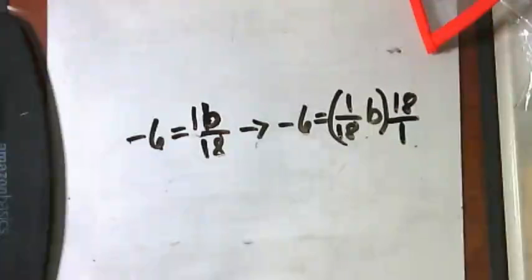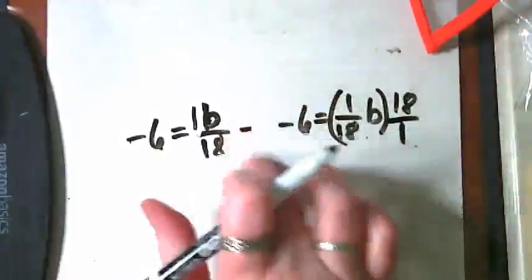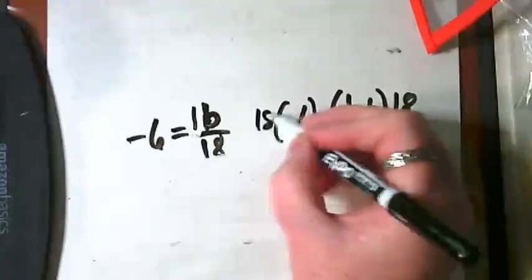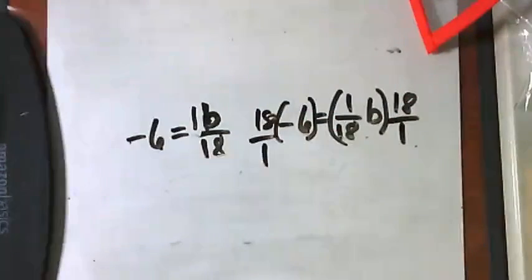Is 18 over 1 the reciprocal of 1 over 18? If that's true, then I'm going to multiply both sides of this equation by that same reciprocal. Because it's an equation and we do the same thing to both sides. You guys are with me?